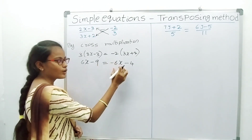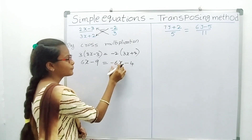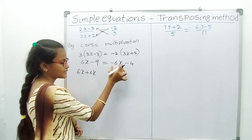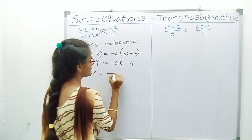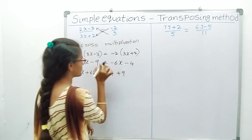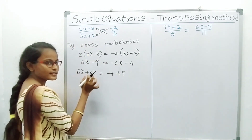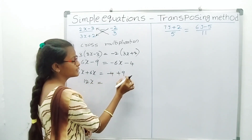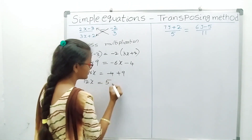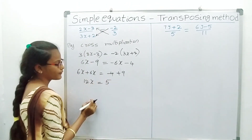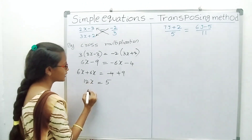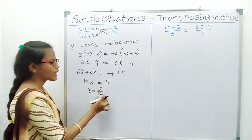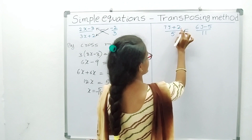3 into 2x is 6x, plus into minus gives minus 9. Minus 2 into 3x is minus 6x, minus 2 into 2 is minus 4. Transpose: 6x plus 6x on LHS, minus 9 changes to plus 9 on RHS. 12x equals minus 4 plus 9, which is 5. Therefore x is equal to 5 by 12.